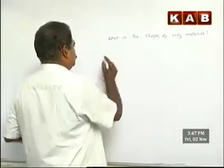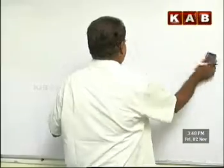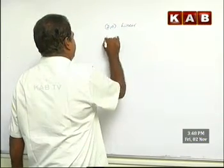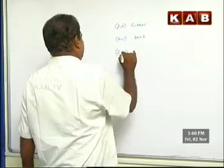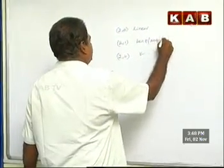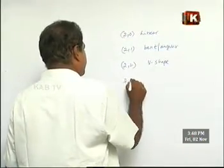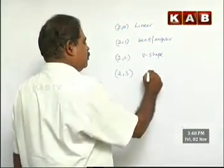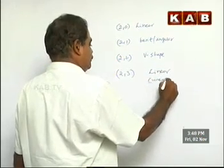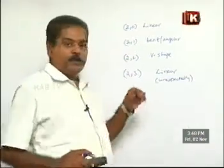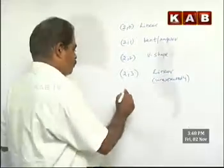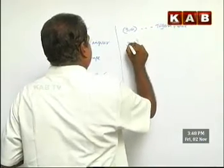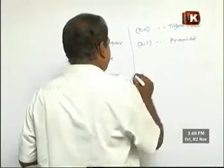So to summarize: 2,0 is linear; 2,1 is bent; 2,2 is V-shaped or bent/angular; 2,3 is also linear, though unexpectedly so — whenever you have lone pairs you don't expect linear geometry. 3,0 is trigonal planar. 3,1 is pyramidal. I expect you to find out that 3,2 is T-shaped from your books.